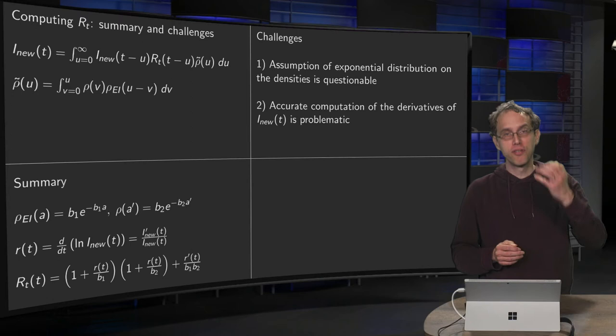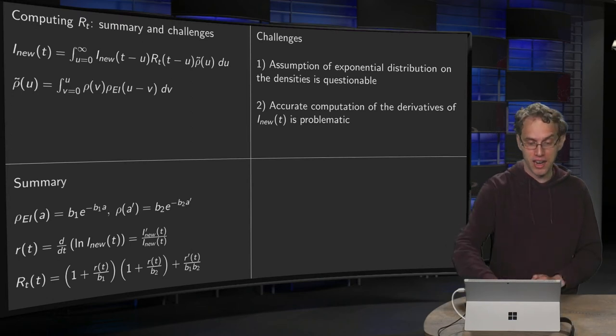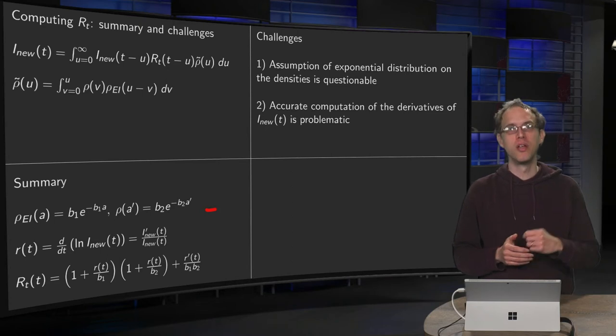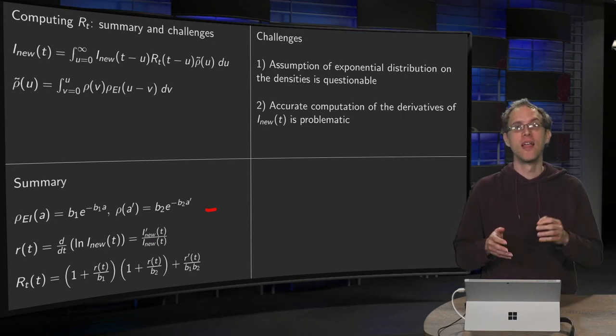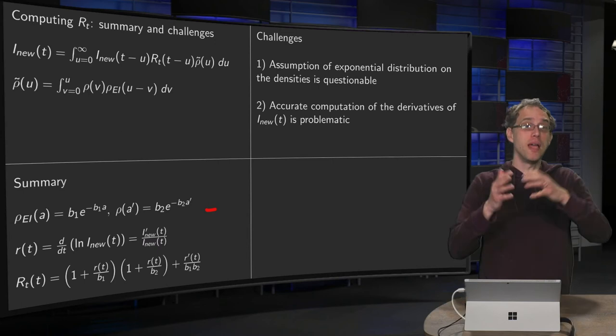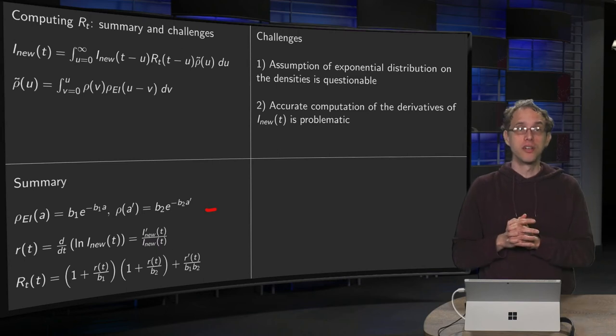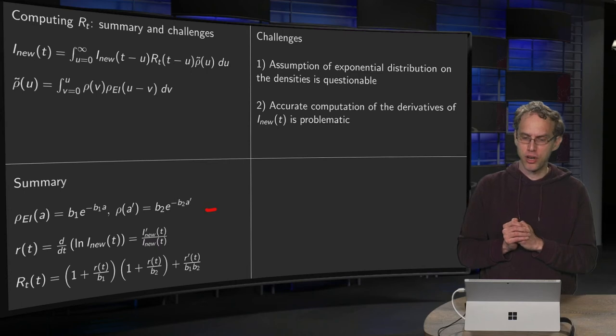First of all, the assumption over here on those probability densities is pretty questionable. Probably it would be much better to take other distributions like gamma distributions. Okay, then you can still do all of the computations, and then maybe you get more or less the same. I don't know. I haven't tried it yet. Okay, questionable assumption, but relatively easy to determine.